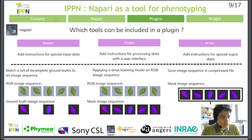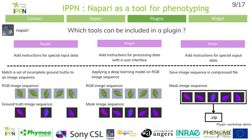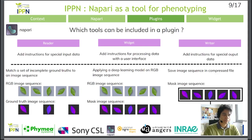Now let's take a look at the technical aspects of plugins. Technically, a plugin offers three tools: a tool for adapting input data, called the Reader; a tool for processing your data, called the Widget; and a tool for adapting the data output, called the Writer. Let's look at these three tools one by one.